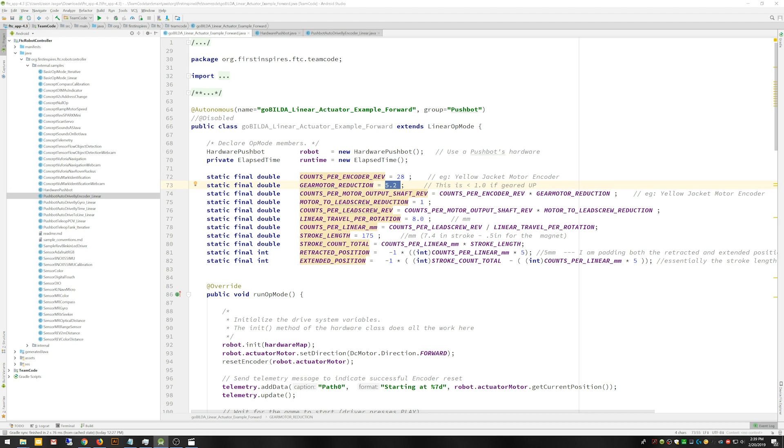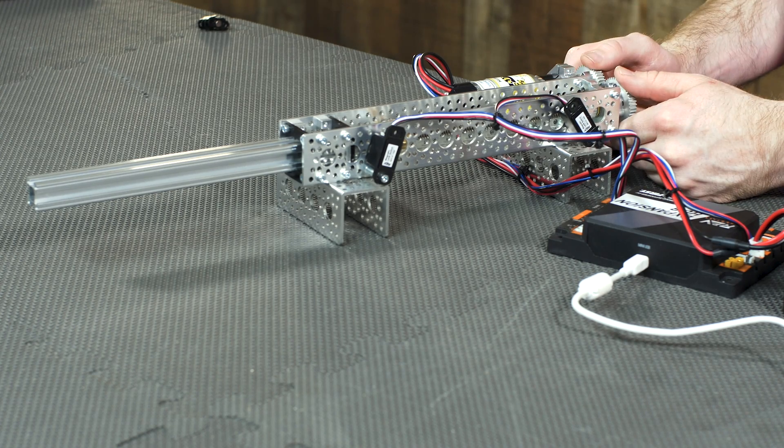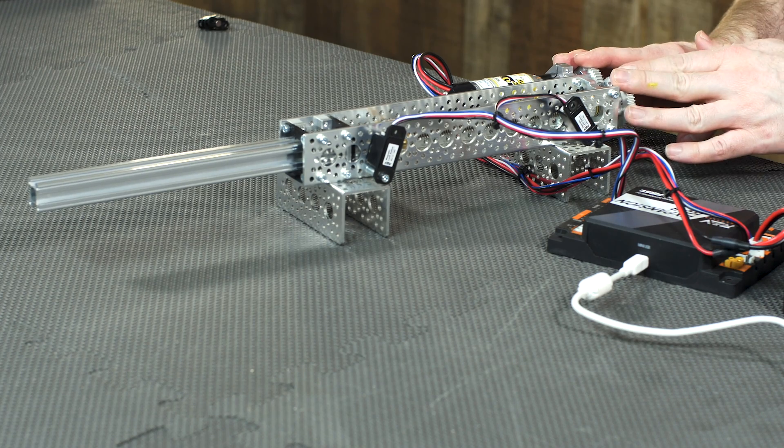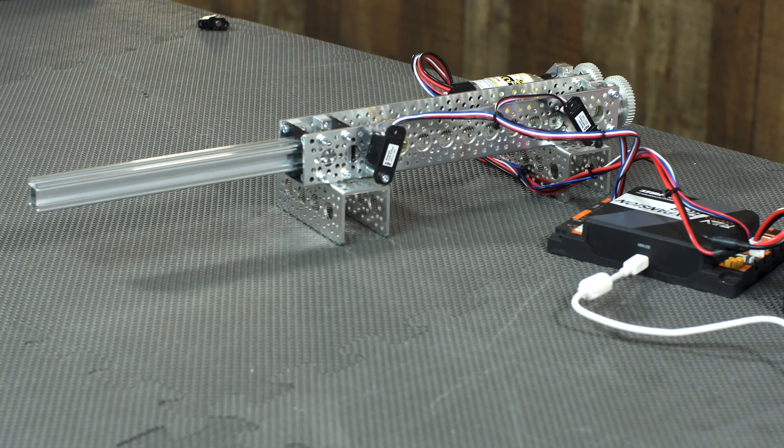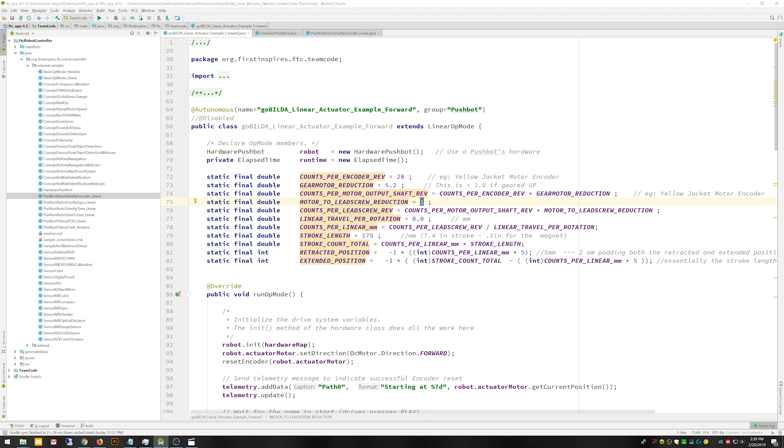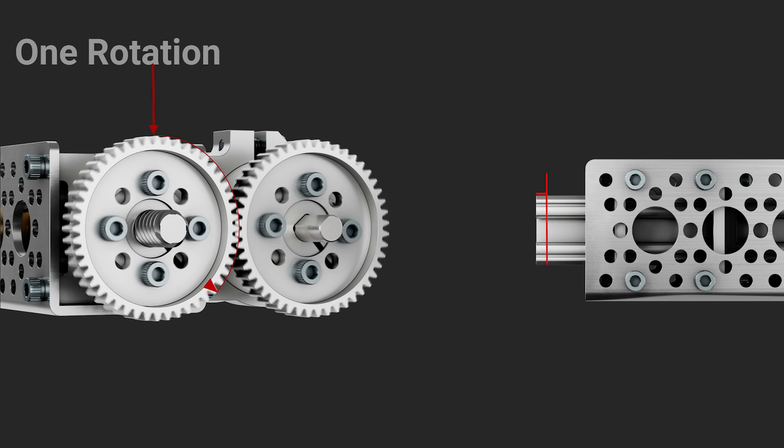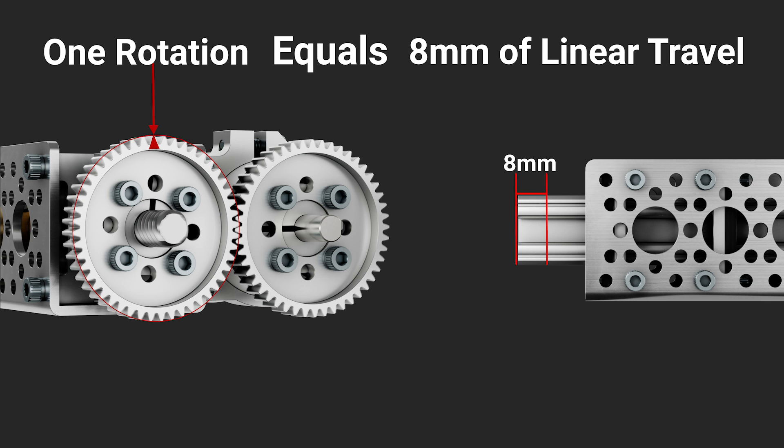And so we're going to use that to calculate our counts per motor output shaft revolution. So after it's gone through that gear reduction, it'll know how many counts there should be. And then in this particular setup, I have a one-to-one ratio with these gears going from the gear motor to the lead screw. You might have a three-to-one ratio or some other ratio if you swapped out different gears. So if you have anything other than a one-to-one, you can go ahead and change that here to factor that in as well. With that information, we can calculate the counts per lead screw revolution. Next, we're going to need to take into account how far the lead screw nut is going to travel linearly every time we rotate the lead screw one time. So for every one rotation of the lead screw, that lead screw nut is going to move eight millimeters linearly. And with that information, we can calculate the counts per linear millimeter.